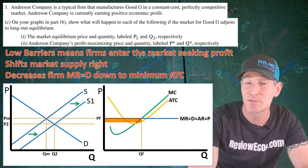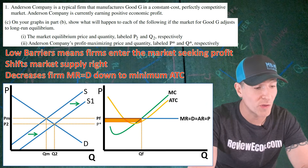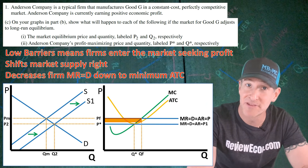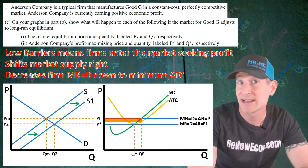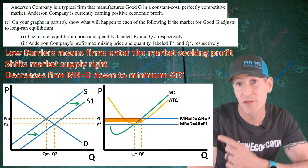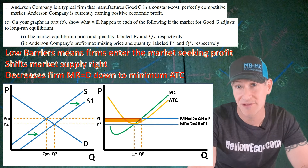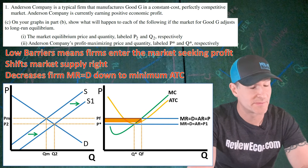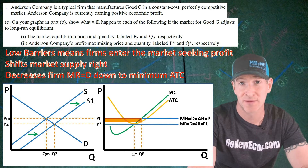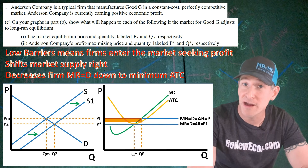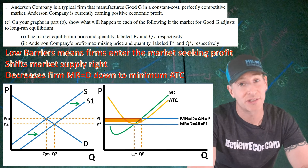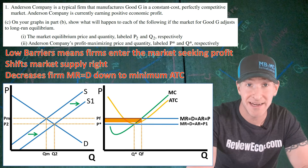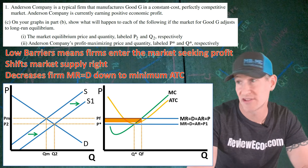We then take that new price all the way over to the firm graph. That price should now be at the minimum of the average total cost curve — it is below the profit box that we had before. We have our new profit maximizing price labeled P star for the firm and the profit maximizing quantity for the firm labeled Q star. You get one point for the changes in the market and a second point for the changes in the firm graph.